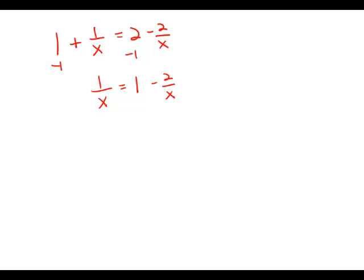And then I'm going to add this fraction plus 2 over x. I'm going to add that to both sides of the equation. So I get 2 over x plus 1 over x equals 1.